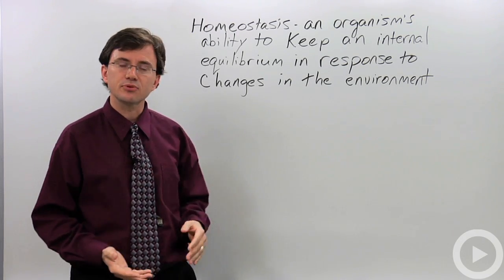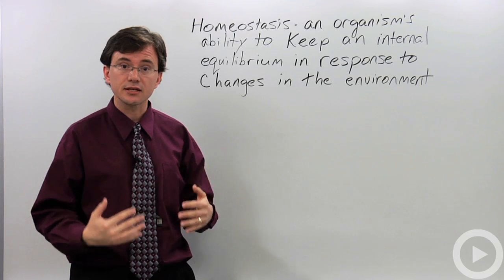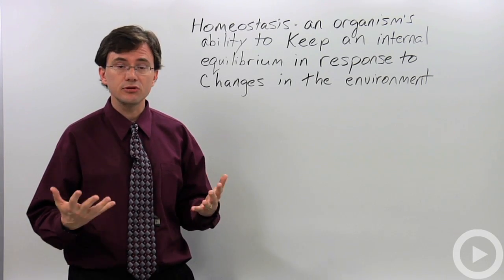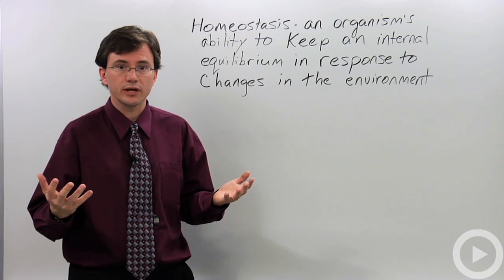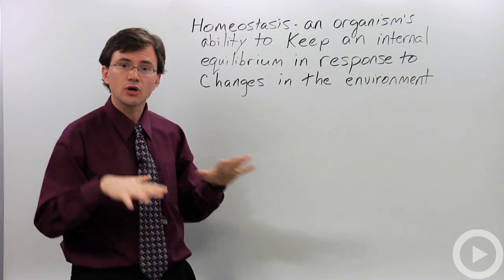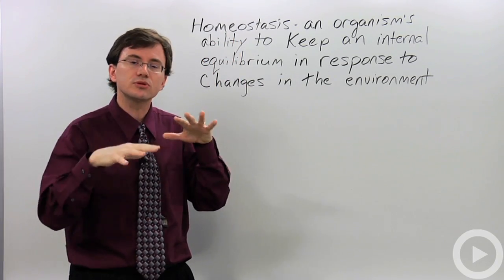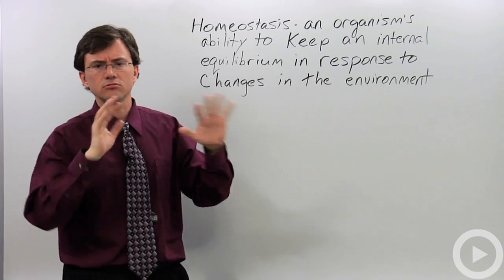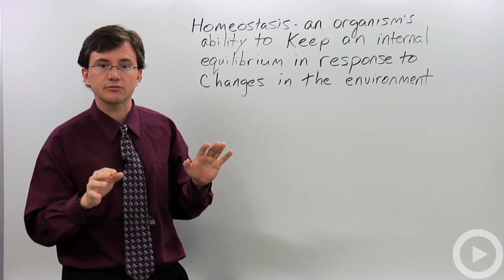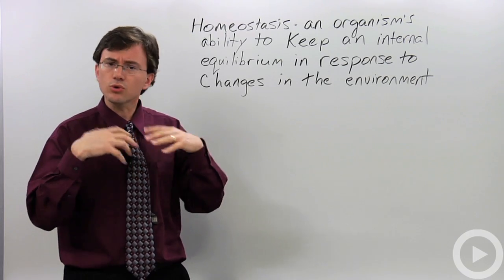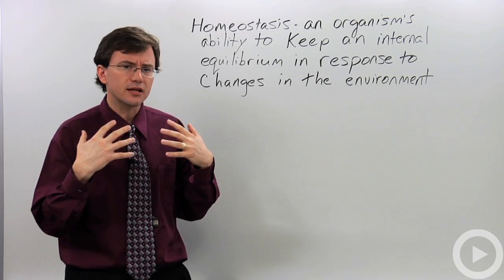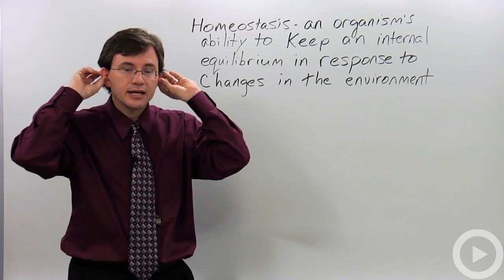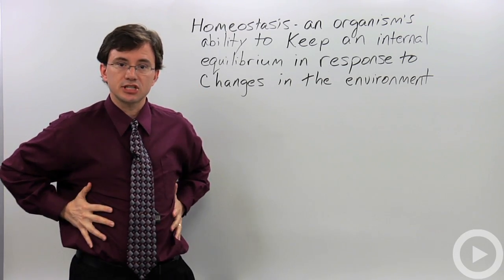One of the easiest examples of homeostasis is our response to changes in environmental temperature. As mammals, our bodies are always trying to keep our internal temperature around 98.6 degrees Fahrenheit, which is roughly 37 to 38 degrees Celsius. When I get cold, my fingers and ears tend to lose heat a lot more easily than, say, my chest.